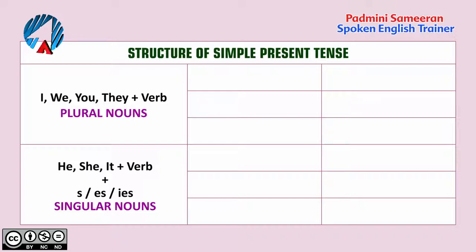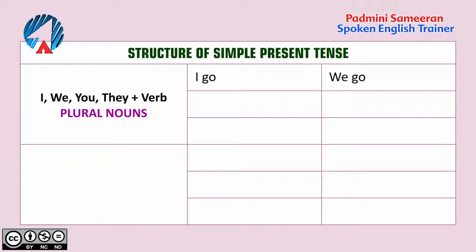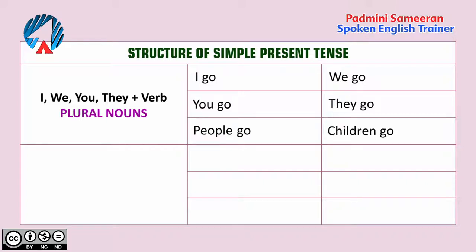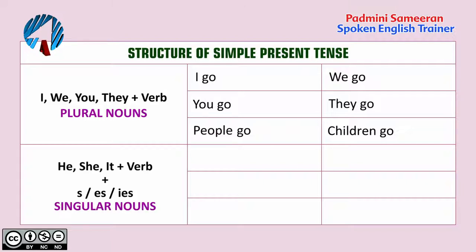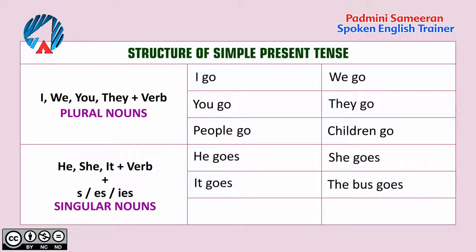For example, we say: I go, we go, you go, they go, people go, children go. So 'go' is the present form of the verb. But with the subjects he, she, it, and so on, we use the s-form of the verb — we add s to the verb. He goes, she goes, it goes, the bus goes, the boy goes, the child goes.